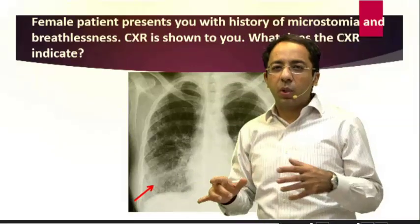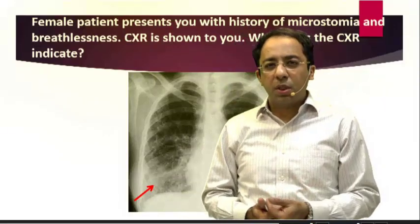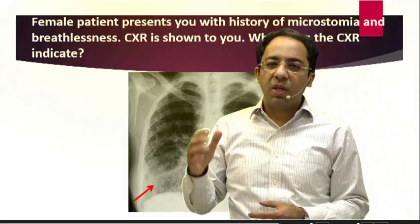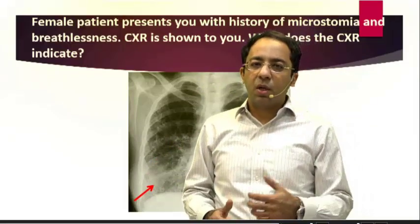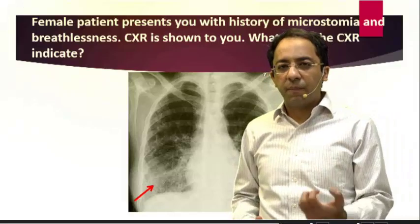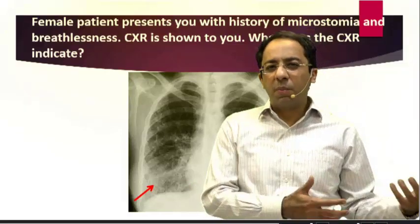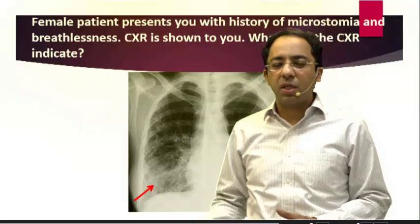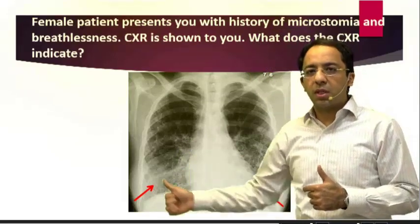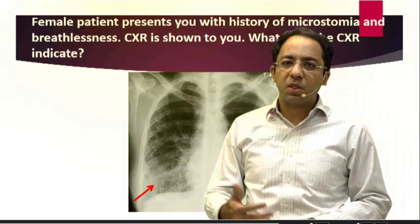We have a chest X-ray showing basal interstitial lung disease, and a woman with a history of microstomia. Microstomia — a small mouth — is a very typical feature of scleroderma, or systemic sclerosis. We could also add dysphagia as a clue, since scleroderma has GI manifestations: the esophagus is involved with dilatation of the distal part and motility problems. Adding interstitial lung disease, breathlessness, and microstomia together, the diagnosis is scleroderma or progressive systemic sclerosis.